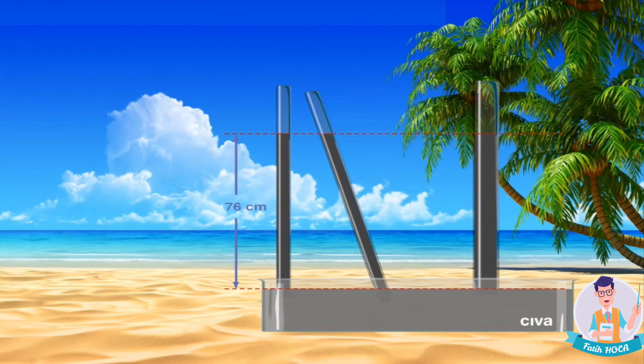As a result, the fact that the mercury in the glass tube does not completely empty into the container demonstrates the existence of atmospheric pressure.